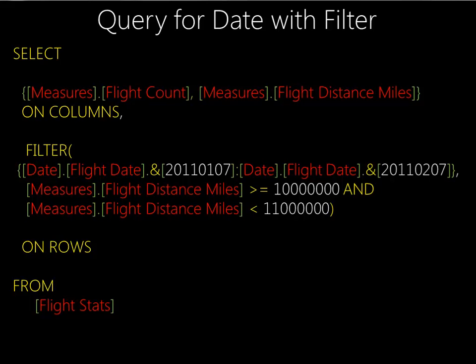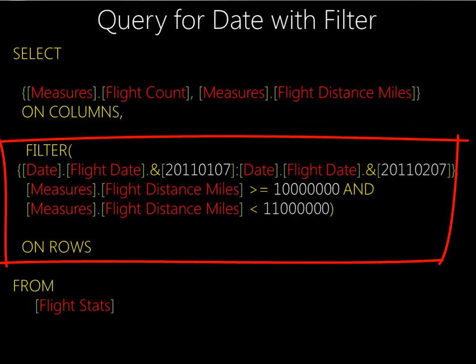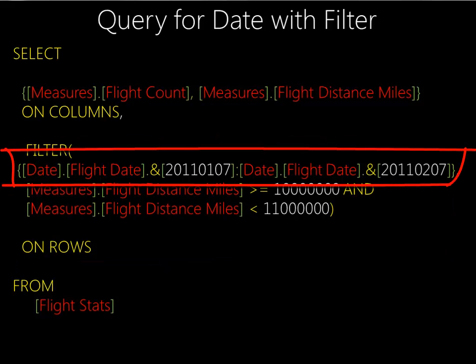Let's take a look at this query in some level of detail. It begins with a SELECT statement and ends with FROM, so those are fairly straightforward. On columns we'll have our measures: a flight count, which is the number of airline flights on a particular day, and the distance miles, which is the total number of miles traveled by all those flights together — those will be aggregated. On rows, we have a couple of things. One is a range of dates. To get our date range, we have to specify a set of members from the dimension, so this is not using the greater-than-or-equal-to kind of notation — we are actually specifying a set, which can get tricky if our front end doesn't have a way to generate this set for us.